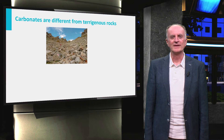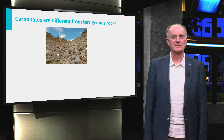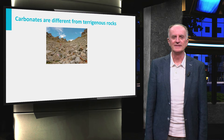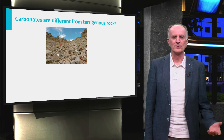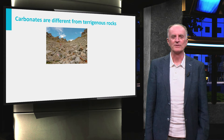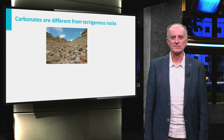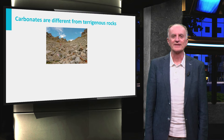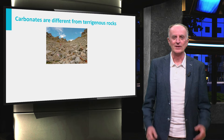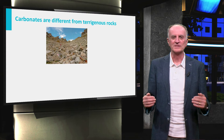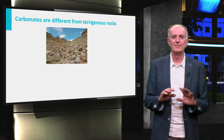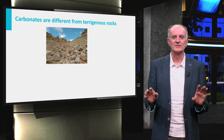We have looked until now at terrigenous rocks, and we have seen that they derive from the mechanical and/or chemical erosion of pre-existing rocks. We look today at carbonates, a large and very important family of rocks which form in a completely different way.